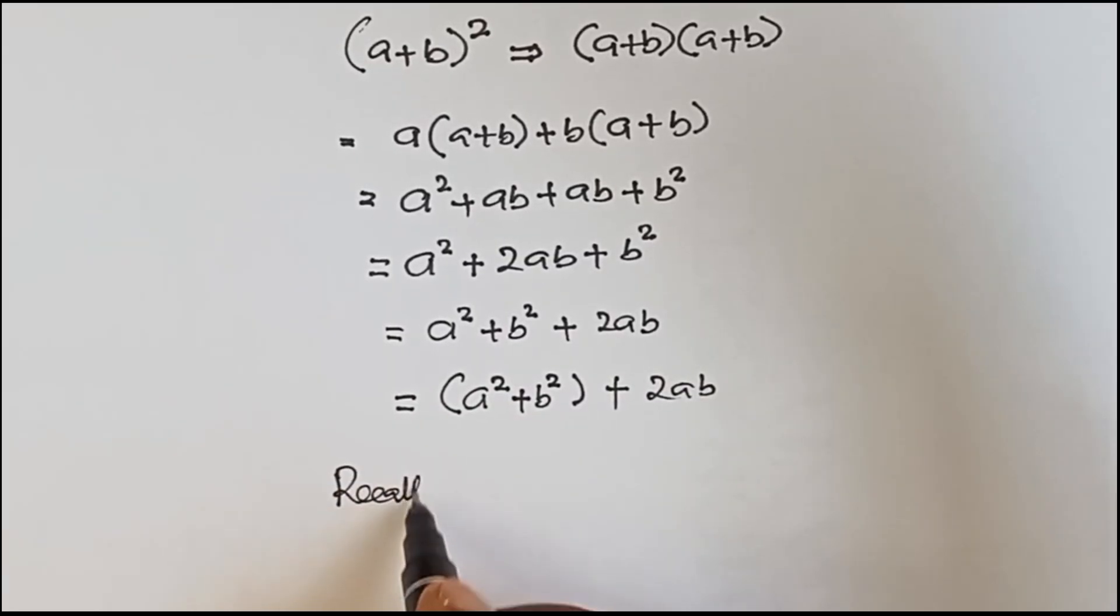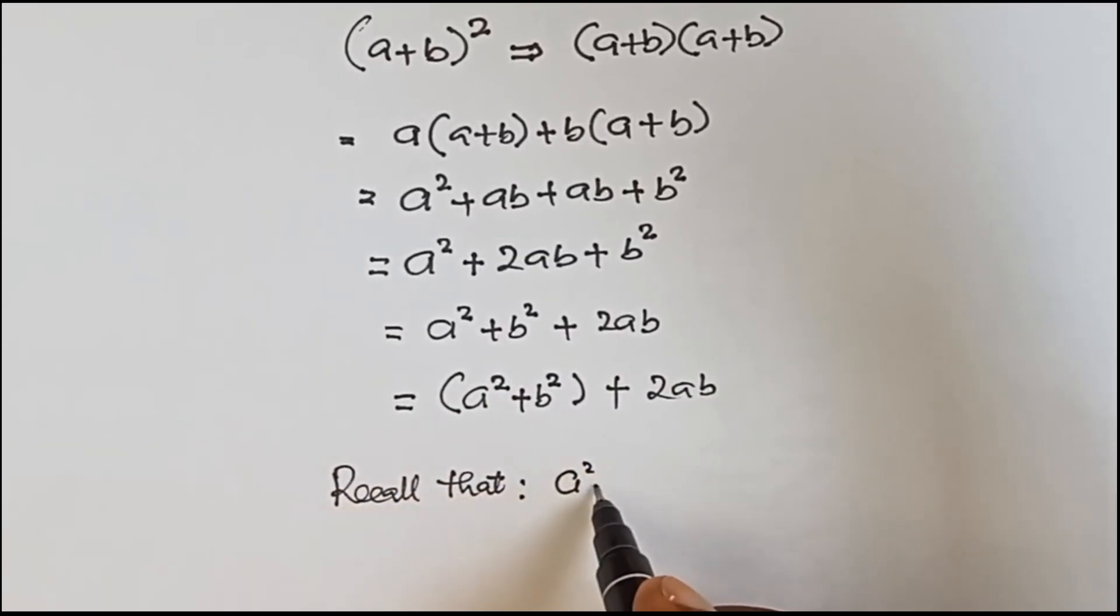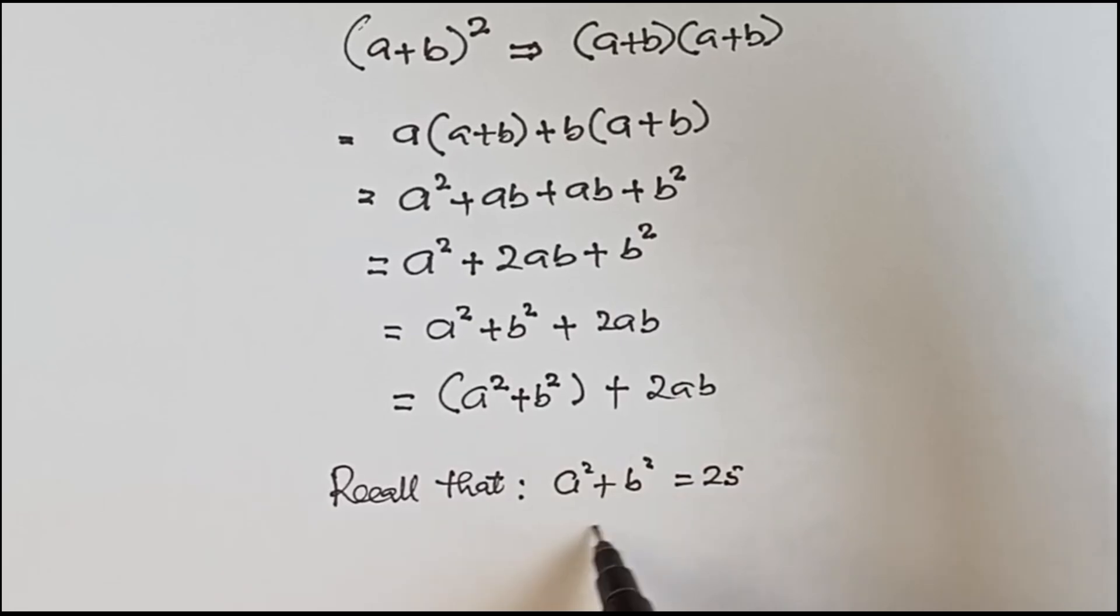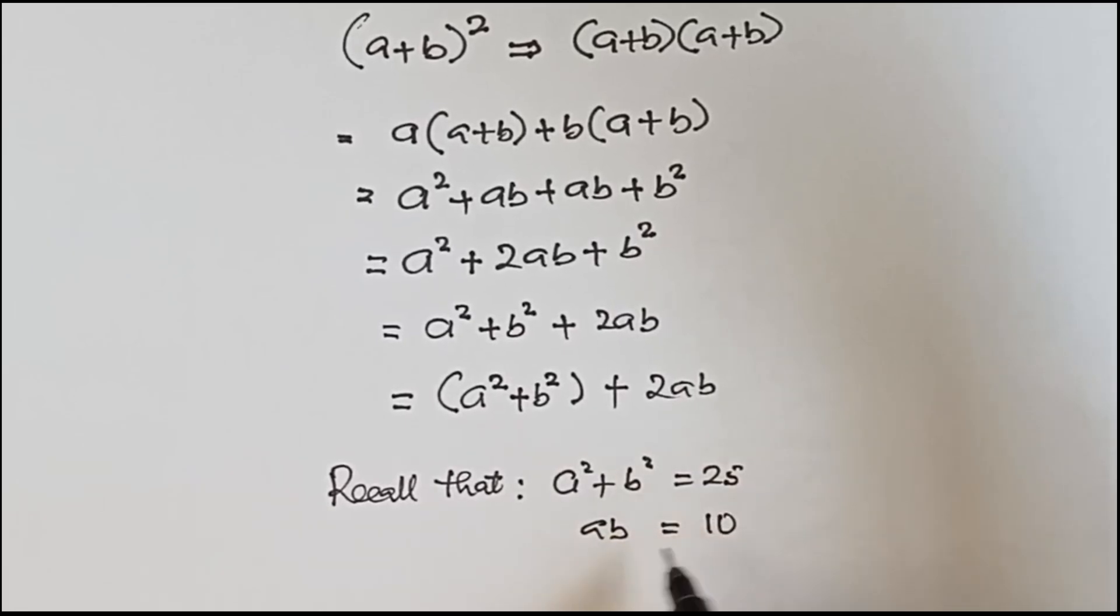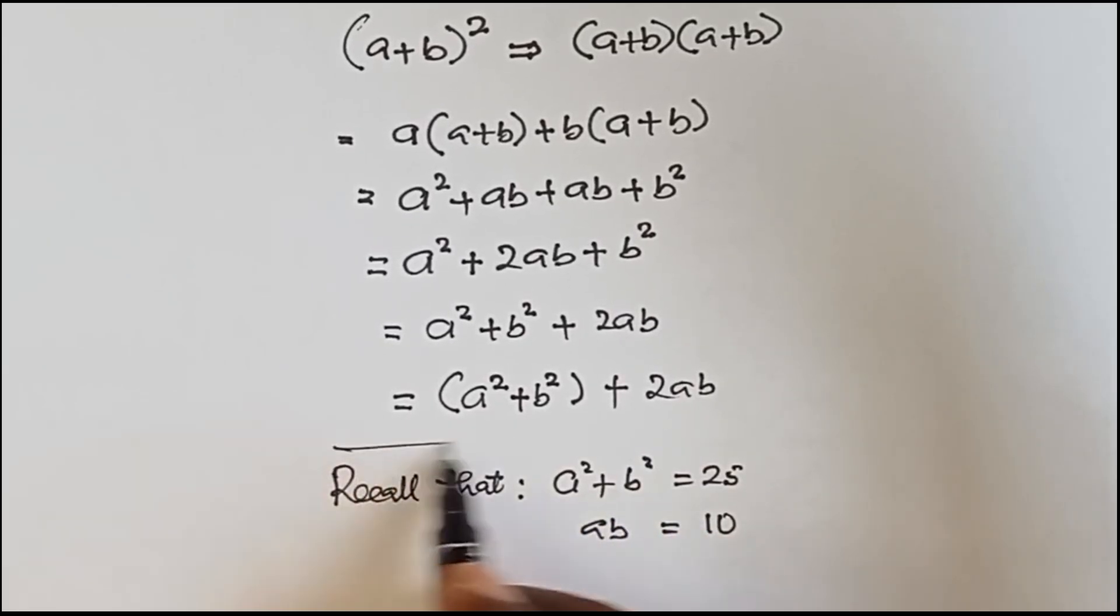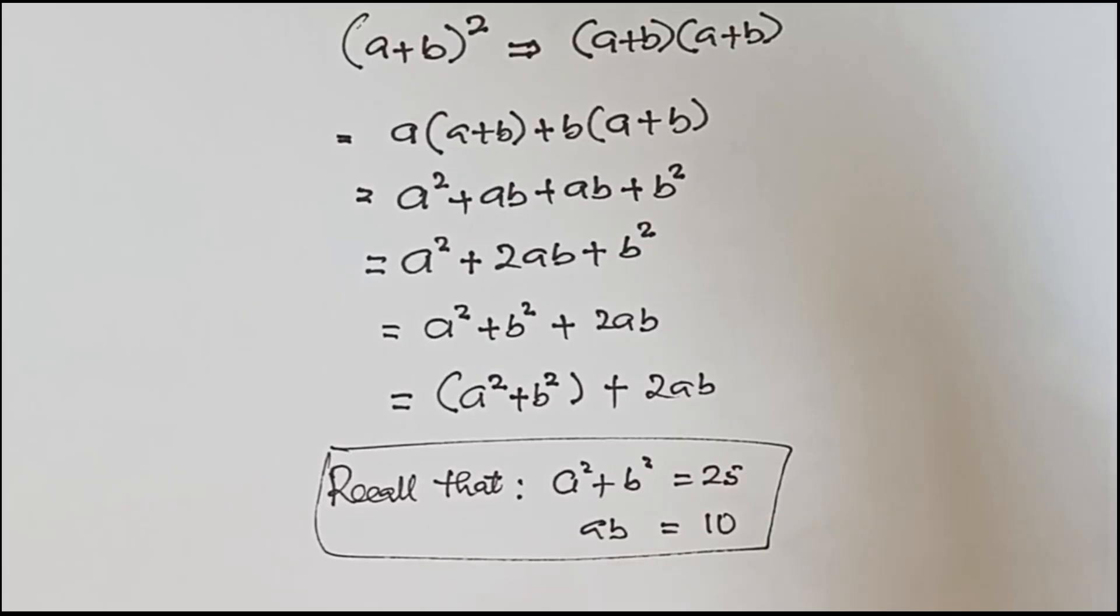And don't forget, recall that we have a² + b² to be 25 and we have ab to be 10. So it means that anywhere we see a² + b² we can write 25 and anywhere we see ab we can write 10.